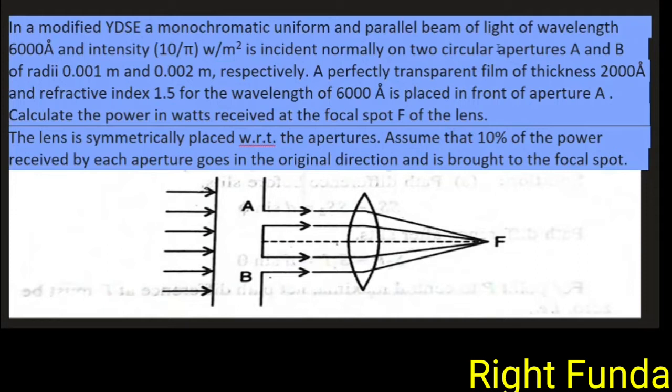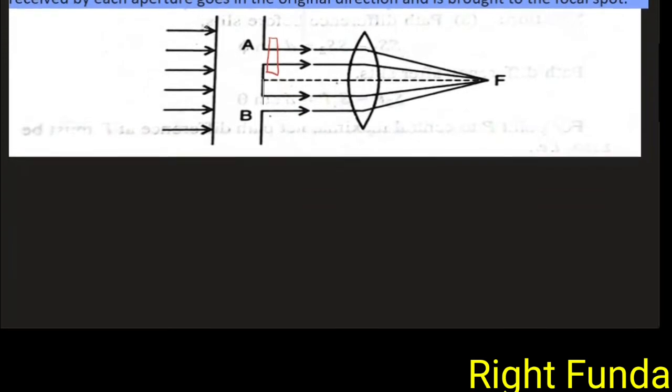What is happening is that there is some data given. 10% only is going there and in front of one of the apertures, we have put one film. The dimensions have been given. Once you go through the question, now you try solving the problem and after a while you can again refer to the solution. We are presenting the solution right now. You can pause the video and resume after solving the problem.